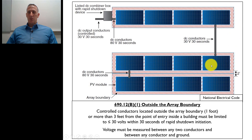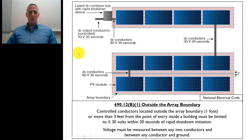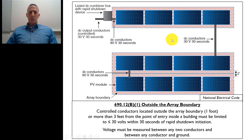Here's the array, and the array boundary extends a foot in each direction. Those controlled conductors located outside the array boundary — anywhere outside that one-foot boundary, or more than three feet from the point of entry inside a building — once it's more than three feet inside the building, all of those conductors must be limited to less than or equal to 30 volts within 30 seconds of the rapid shutdown initiation.